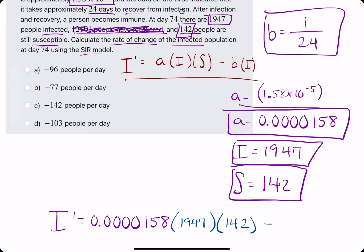Minus B, which is 1 over 24, times I, which is 1,947.